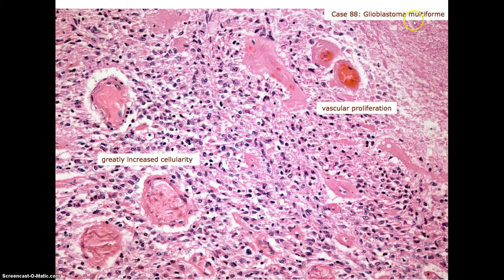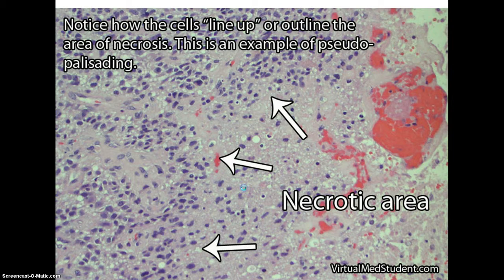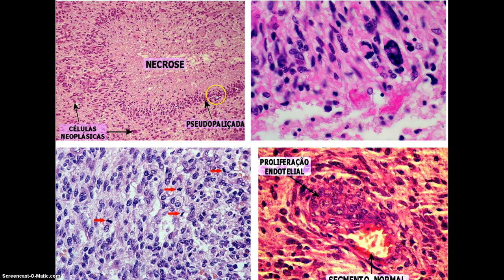The classic glioblastoma multiforme has vascular proliferation — we see the pink color surrounding the blood vessels, the thickened basement membrane, and greatly increased cellularity, with all the blue dots being nuclei. There can be sites of necrosis, and the cells close to those will be palisading away. We have the necrosis sites, the pseudopalisades, and then the neoplastic cells, where we would expect to see Ki-67 staining for the mitotically active cells.